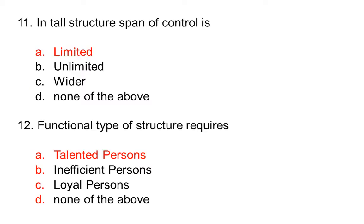In tall structure, span of control is: option A limited, option B unlimited, option C wider, option D none of the above. The correct answer is option A, limited.